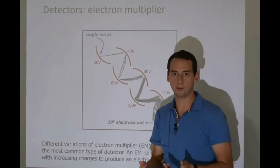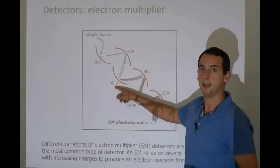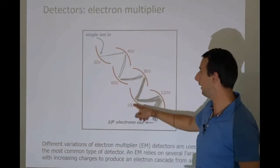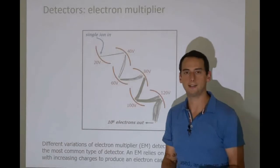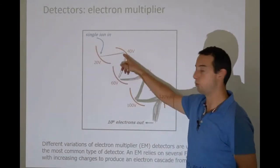and the next plate, and the next plate. And what you can see is a cascade. You get an exponential amplification. One ion yields two electrons, yields four, yields eight,